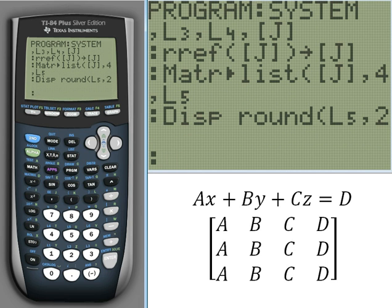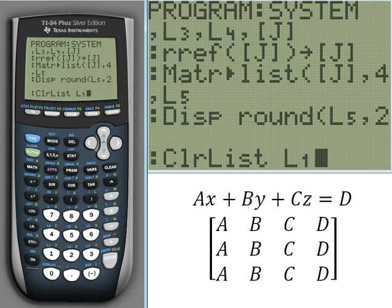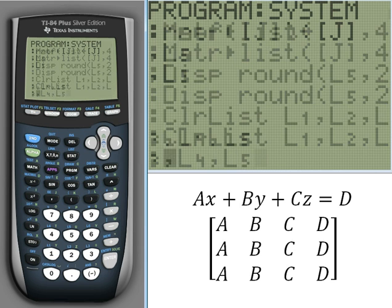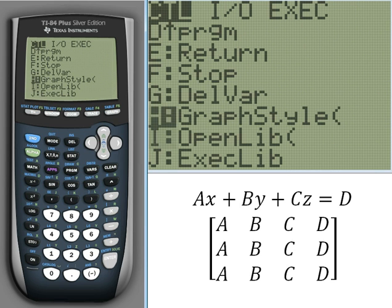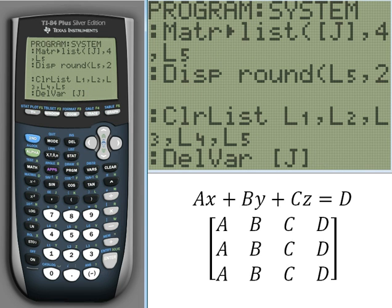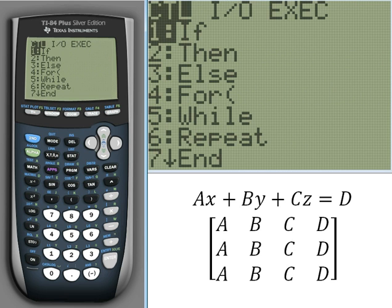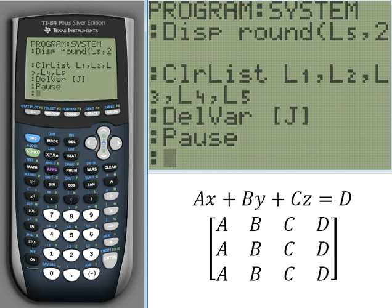Now that we've done that, we can clean this up a little bit by deleting some variables. Go back to stat, down to clear lists. Clear all of our lists, all the lists that we've used. Delete the variable matrix J. So after we've deleted that variable, we can go ahead and pause so the answer doesn't run away from us. Go ahead and pause. And then the unnecessary stop, just because. That's all programming.